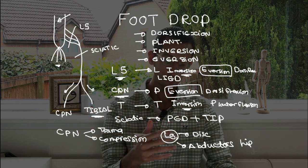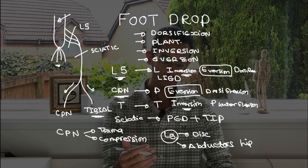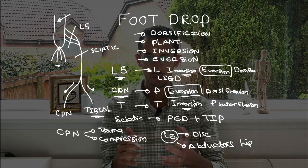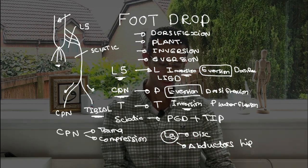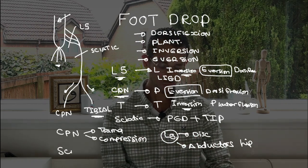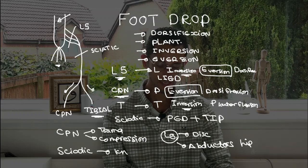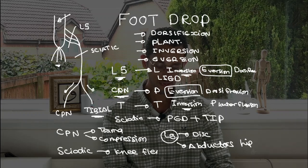The other thing: if we go higher up with the sciatic nerve, the sciatic nerve, as I said, will be everything will be affected, including the inversion, the eversion, the plantar flexion, and the dorsiflexion. But also, what's an addition to the sciatic nerve would be the possibility of affection of the knee - the knee flexion as well.